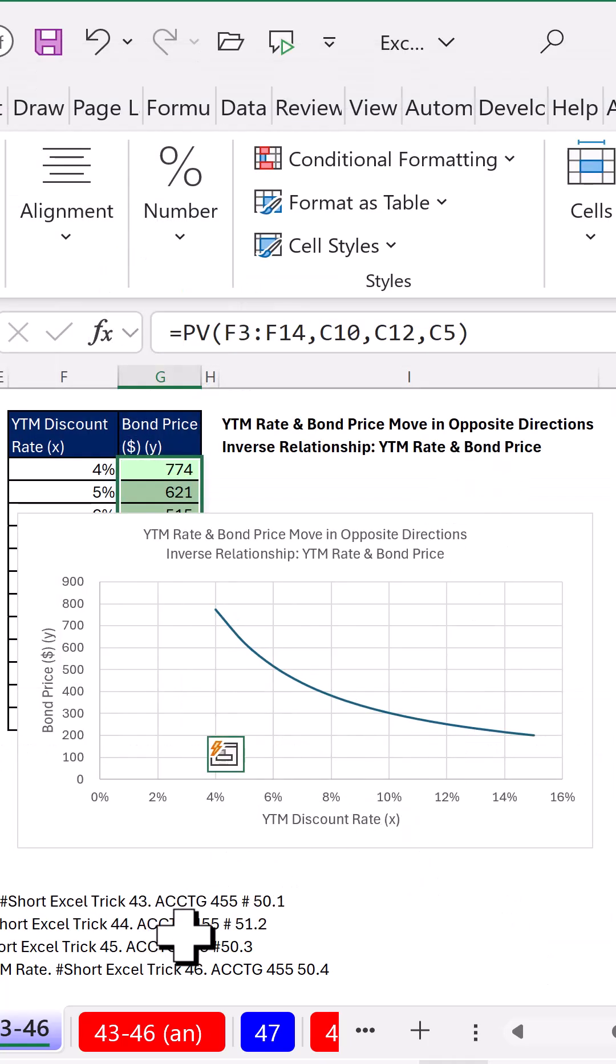There's our XY scatter chart without any chart junk showing us YTM. As it increases, bond price decreases.